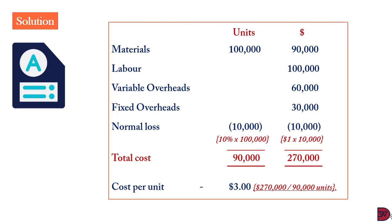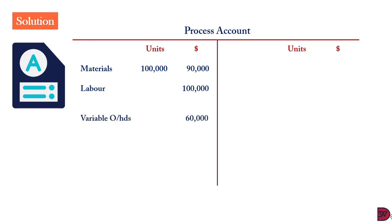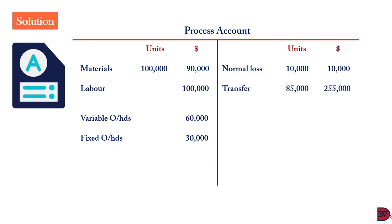Moving to the process account — we bring in the unit column and the amount column. Materials: 100,000 units at $90,000; labor $100,000; variable overheads $60,000; fixed overheads $30,000. Normal loss: 10,000 units with scrap value of $10,000. The transfer (actual output to sales or storehouse): 85,000 units at $255,000, which is the $3 cost per unit multiplied by 85,000. The abnormal loss is 5,000 units — the difference between expected output of 90,000 and actual output of 85,000 — valued at $15,000.